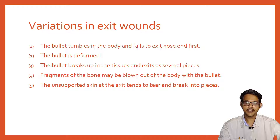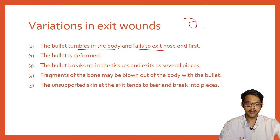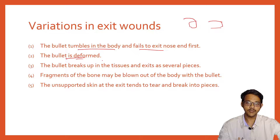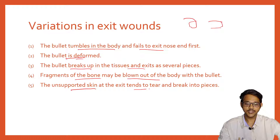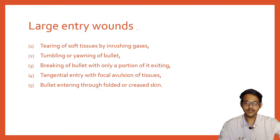Variations in exit wounds: the bullet may tumble in the body and fail to exit nose-first, rotating along its axis, so the base may exit first. The bullet may be deformed, so the exit wound is not circular and may have sharp edges. The bullet may break up in tissues and exit as several pieces. Bone fragments may be blown out with the bullet, and unsupported skin at the exit tends to tear and break into multiple pieces.